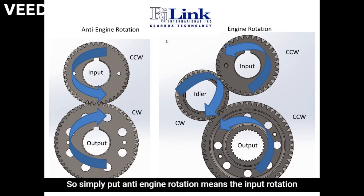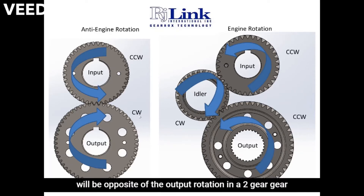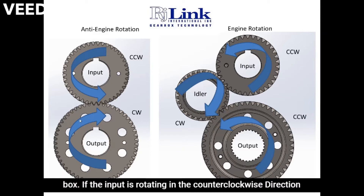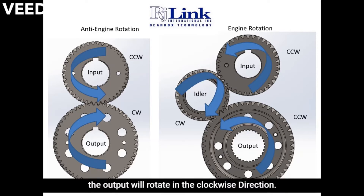Simply put, anti-engine rotation means the input rotation will be opposite of the output rotation. In a two-gear gearbox, if the input is rotating in a counterclockwise direction, the output will rotate in a clockwise direction.